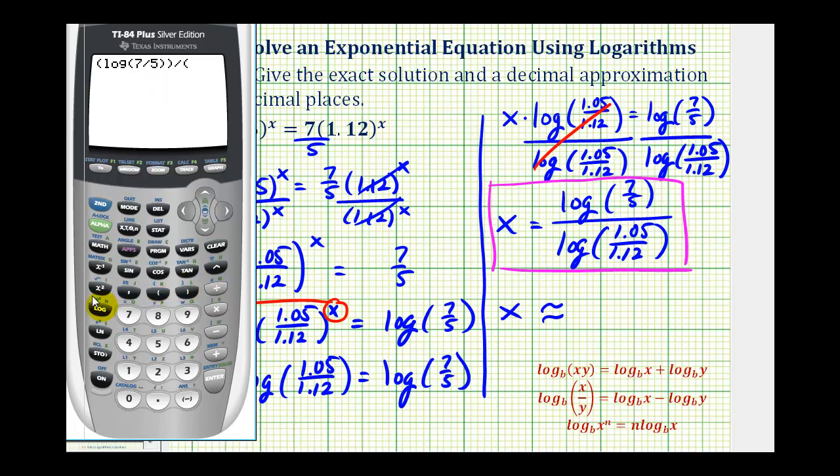divided by common log of 1.05 divided by 1.12, closed parenthesis for the logarithm, and closed parenthesis for the denominator. So rounding to four decimal places, x will be approximately negative 5.2135.